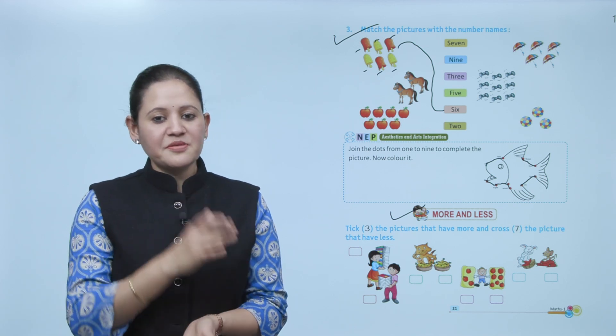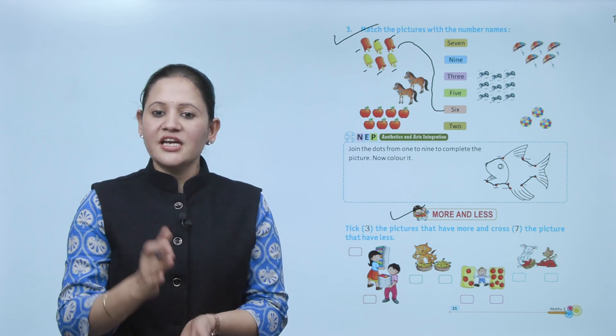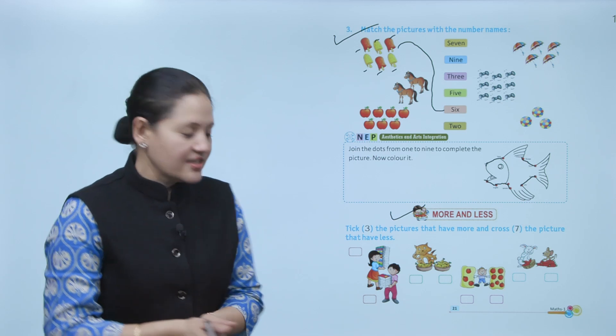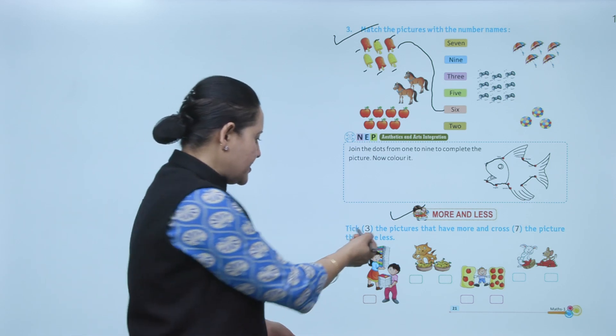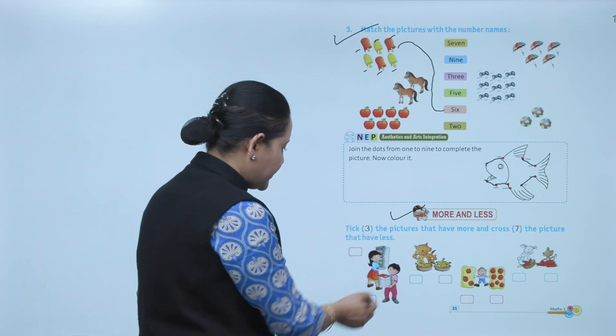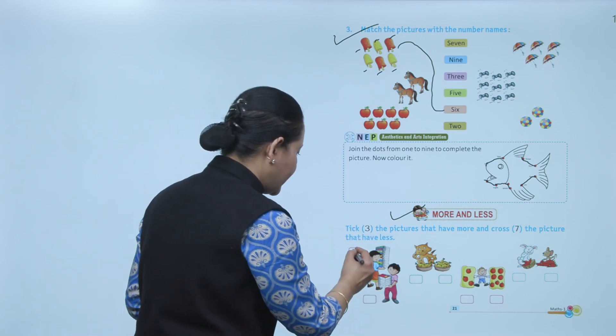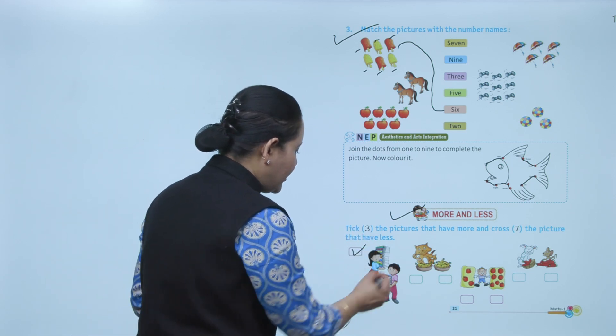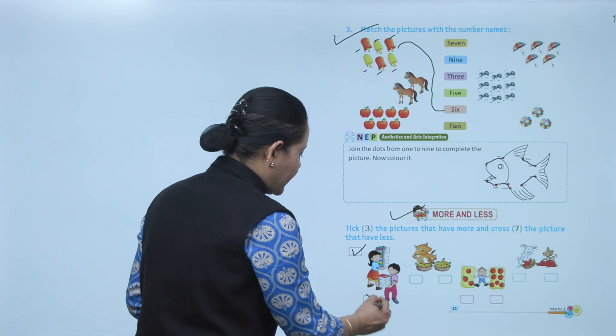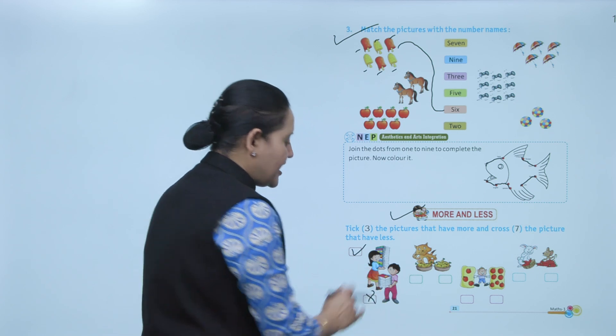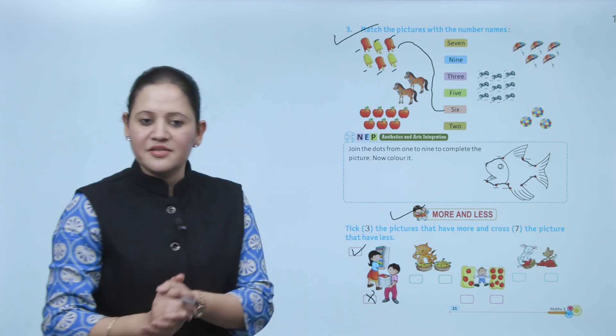Next: more and less. 'More' means greater, 'less' means fewer. Circle the picture that has more and put a cross on the picture that has less. In this picture the girl has more books — so circle it — and cross the boy because he has fewer books.